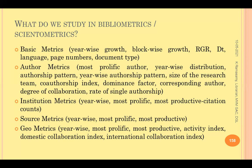In bibliometric and scientometric studies, we have many metric indicators. We have basic metrics: year-wise growth of literature, block-wise growth, relative growth rates, and doubling time — how many years before the literature count doubles. We also study language-wise distribution, page length, document types (articles, conference papers, books, editorials, reviews, retractions). In author metrics, we identify the most prolific authors, year-wise distribution, authorship patterns (single, joint, multiple), size of research teams, co-authorship index, and dominance factor — in how many articles an author is the first author.